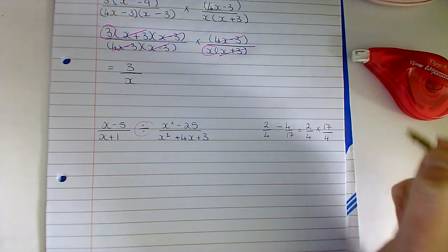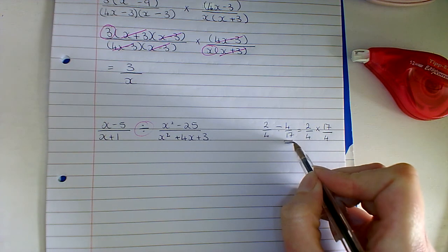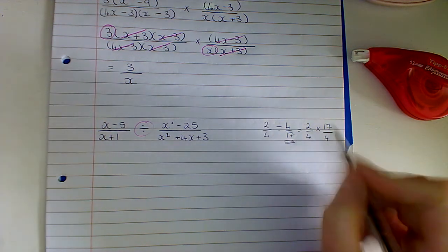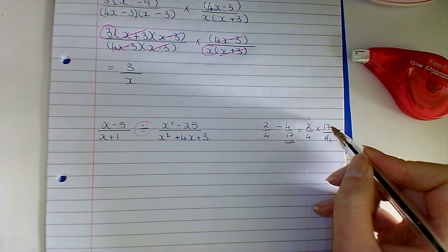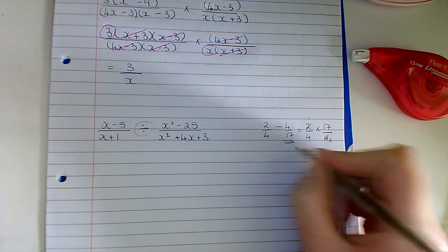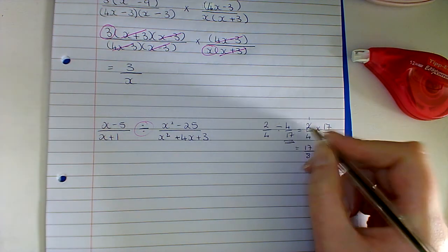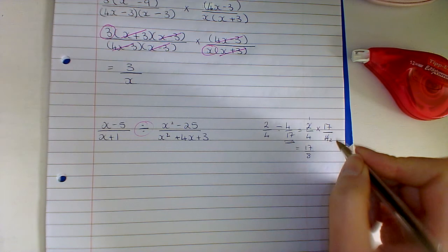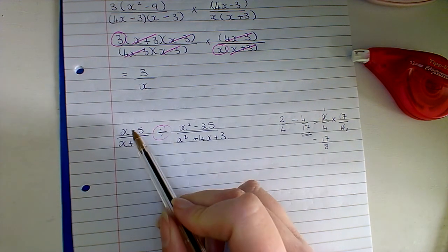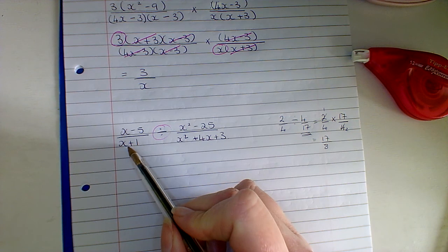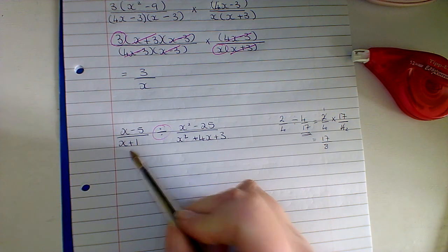Okay, now I can just cancel here if I want to, so that goes in here and I'm left with 17 over 8. So you're still multiplying top by top, bottom by bottom to get your answer. So in one line here I'm going to keep my first term the way that it is, I'm going to invert and factorize all at once, and I'm going to change my sign from divide to multiply.